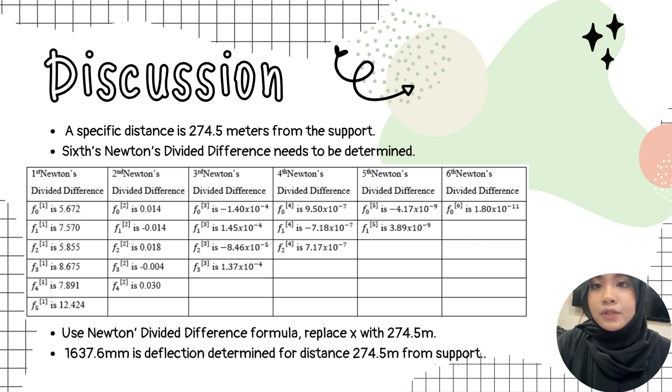Hello everyone, my name is Noor Alainan Jamitia Azman. I will present about the discussion. For the discussion, a specific distance is 274.5 meters from the support. Six Newton divided differences need to be determined. As shown in the table, first until sixth Newton divided difference values were determined.